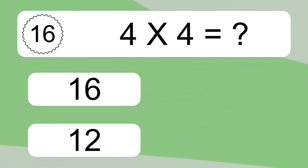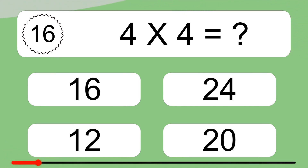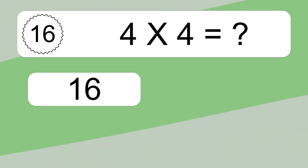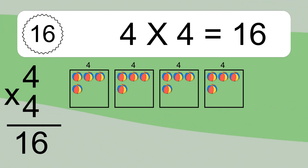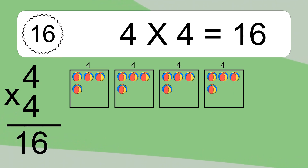4 times 4 equals what? 4 times 4 equals 16. We have 4 boxes, and each box has 4 colorful balls inside. If you count all the balls in all the boxes together, you will have 4 times 4 balls. This equals 16 balls.